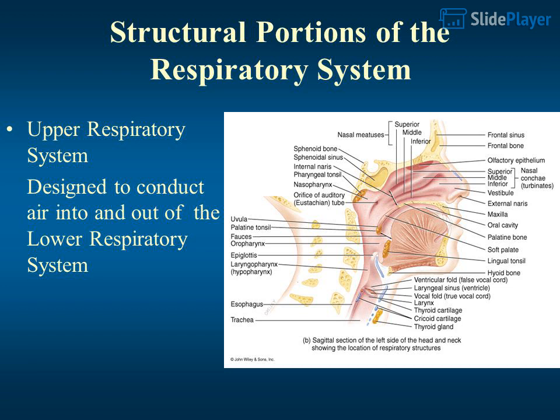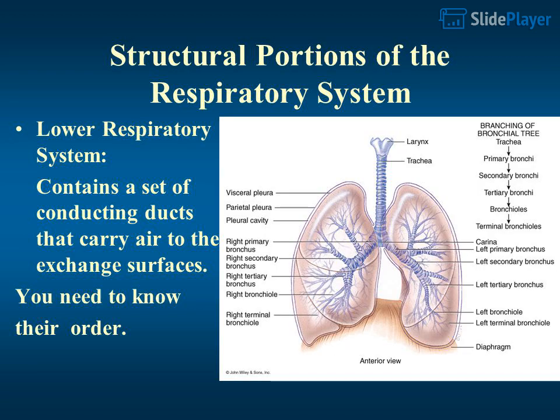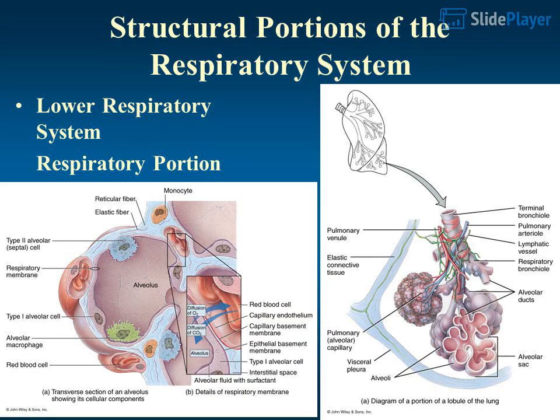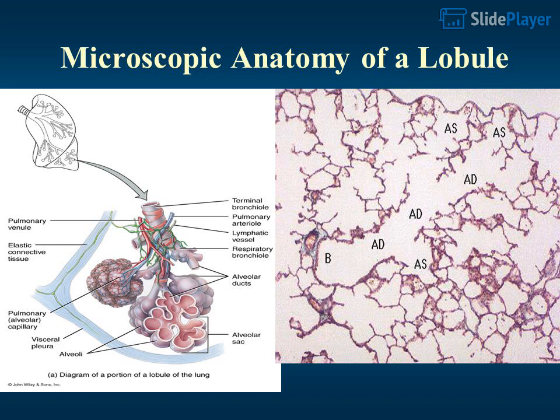The upper respiratory system is designed to conduct air into and out of the lower respiratory system. The lower respiratory system contains a set of conducting ducts that carry air to the exchange surfaces — you need to know their order. The lower respiratory system also includes the respiratory portion, which covers the microscopic anatomy of a lobule.